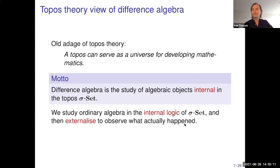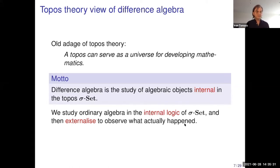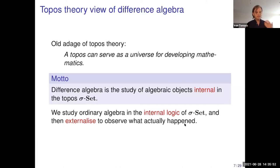As already mentioned in a number of previous talks, the good thing about a topos is that it can serve as a universe for developing mathematics. So we redefine difference algebra to be the study of algebraic objects internal to the topos of difference sets, studying ordinary algebra in a slightly unusual universe. Working a lot in difference algebra, you become self-aware that it's a somewhat esoteric subject, but viewing it this way, it becomes just normal plain mathematics.